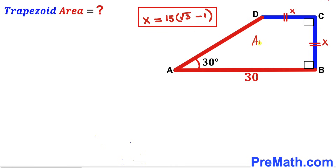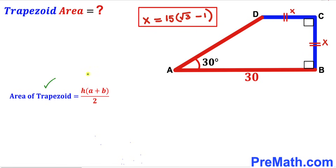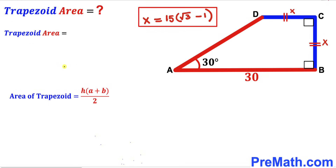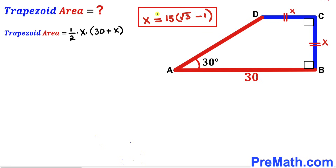For the final step, we calculate the area of trapezoid ABCD using the formula: Area = h × (b₁ + b₂) / 2. The height is x, and the two bases are x and 30 units. So Area = (1/2) × x × (30 + x). Substituting x = 15(√3 − 1), we get: (1/2) × 15(√3 − 1) × (30 + 15(√3 − 1)).